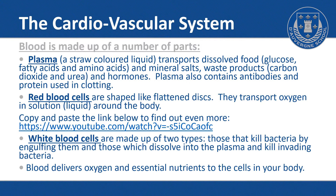Plasma transports dissolved food — glucose, sugar, fatty acids and amino acids — and mineral salts and waste products like carbon dioxide and urea, as well as hormones. Plasma also contains antibodies which fight off viruses, and it contains protein used in clotting, so if you cut yourself it would help to form a scab.